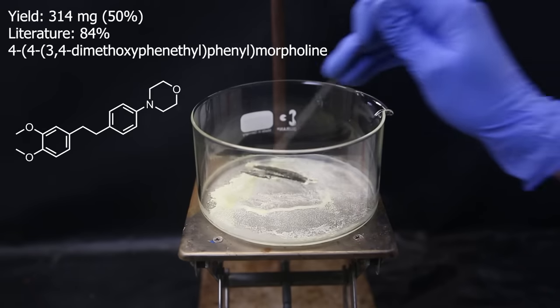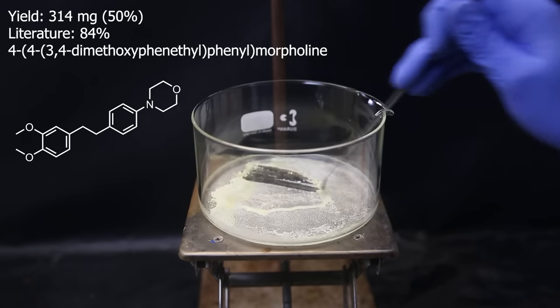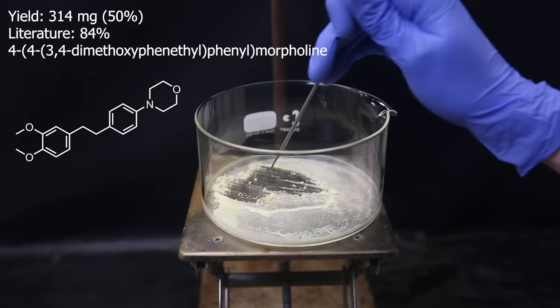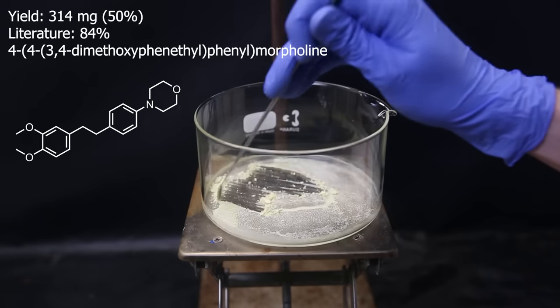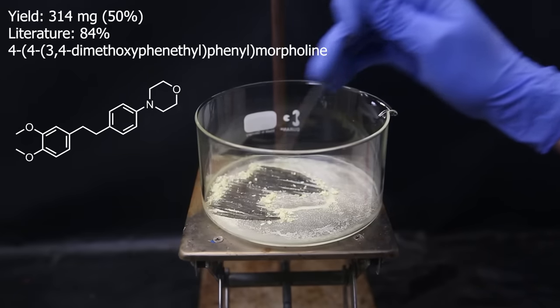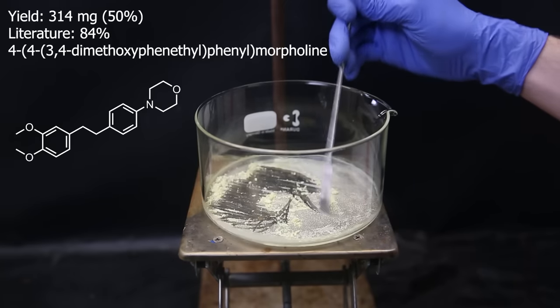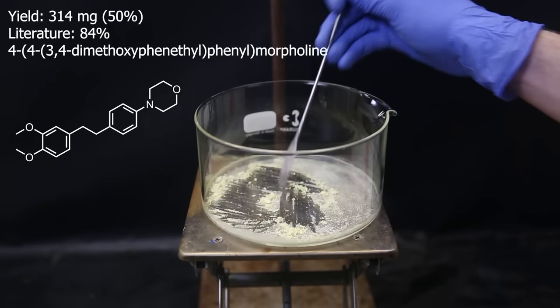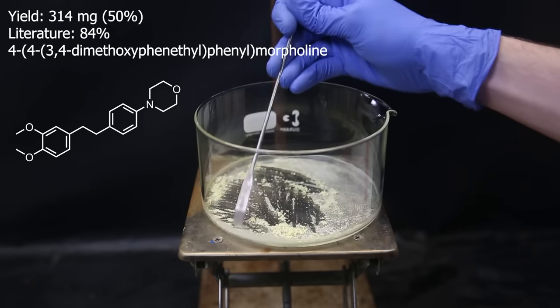I scrape it all off, and I am left with 314 milligrams of the product, 4-(4-(3,4-dimethoxyphenethyl)phenyl)morpholine. This is a yield of 50%, which is somewhat lower than the 84% from literature. But I did change the scale and increase the concentration, so that might be why. Either way, I can confirm that the literature on this part is reproducible.